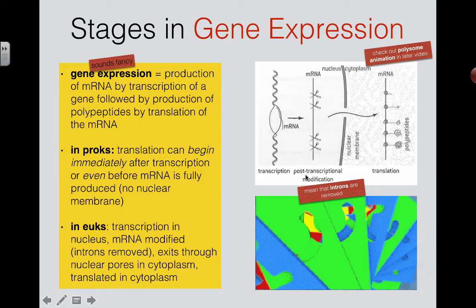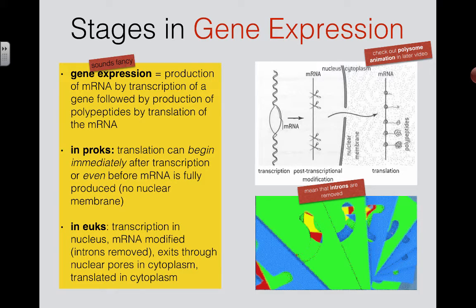This is called post-transcriptional modification. After transcription, we modify the mRNA a little bit. Special enzymes called restriction endonucleases act like scissors, cutting bits of the mRNA out. We remove the parts we don't want — called introns. The remaining good parts are called exons, and they get spliced — meaning stuck or glued — together.